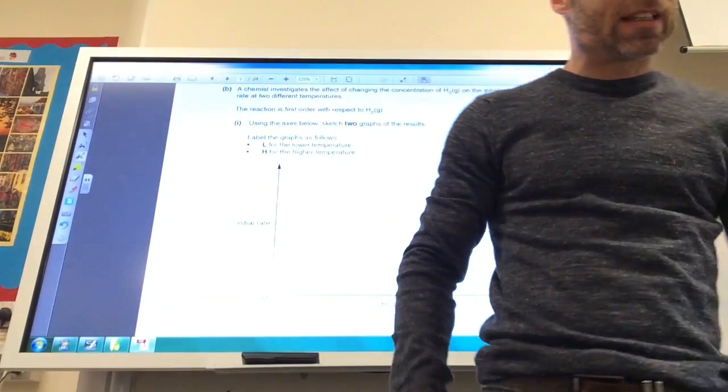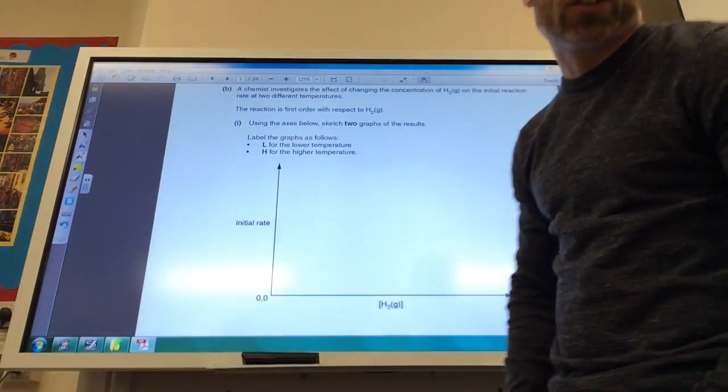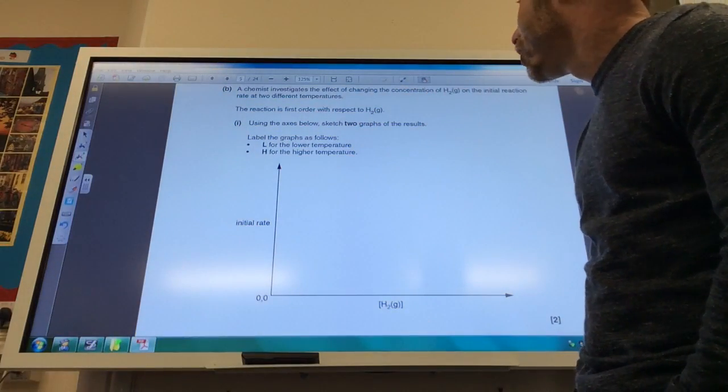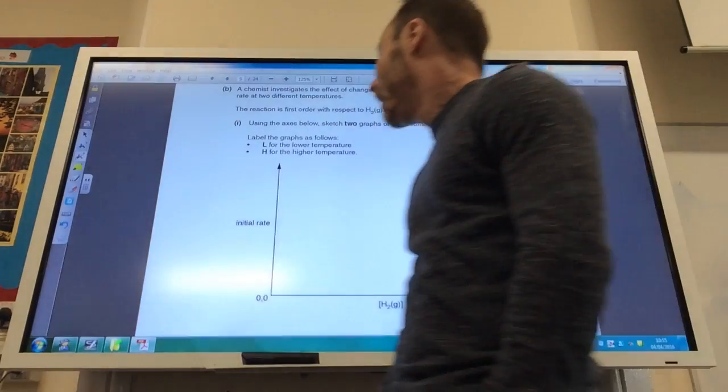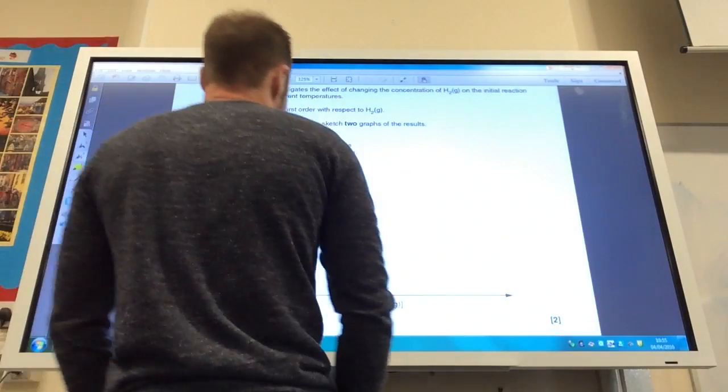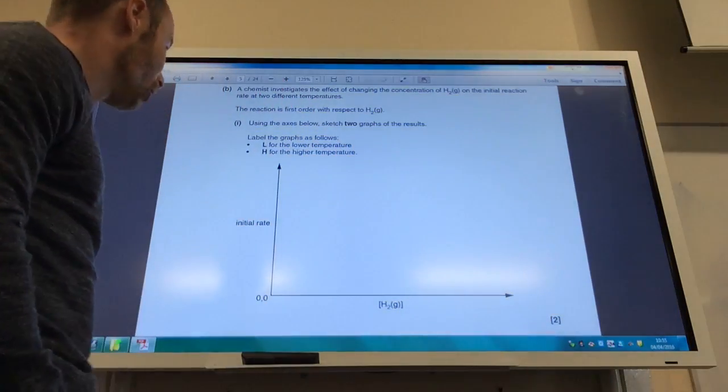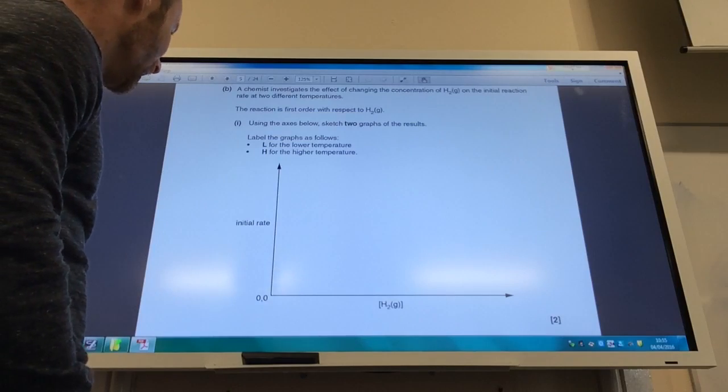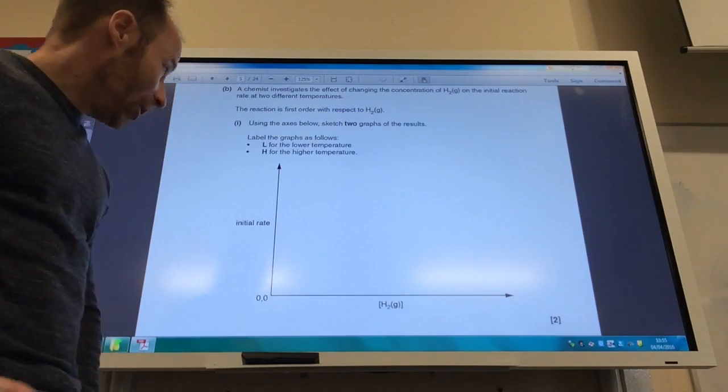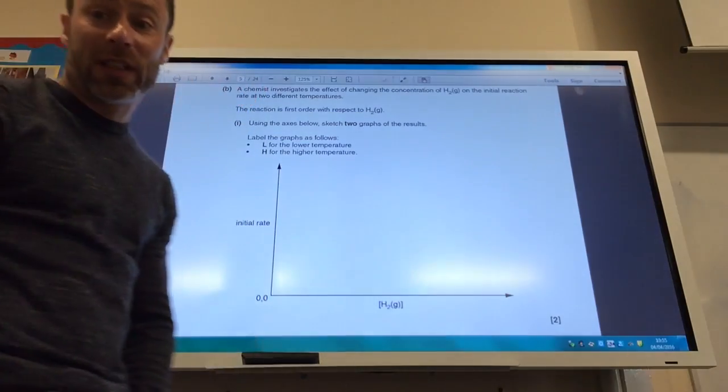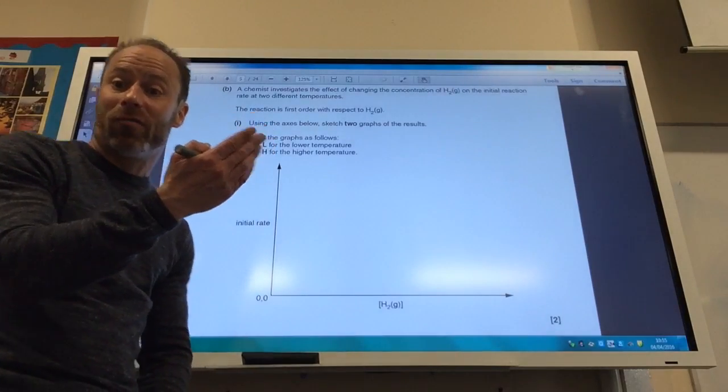Okay, so part B. A chemist is investigating the effect of changing the concentration of hydrogen on the initial rate at two different temperatures. The reaction is first order with respect to H2. Sketch two graphs for the results, L for the lower temperature, H for the higher temperature. Well, it's first order, so it's going to be a straight line, and obviously the higher temperature will have a higher rate.